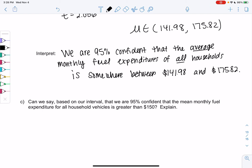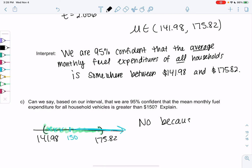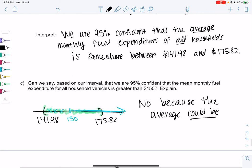Can we say, based on our interval, that we're 95% confident that the mean monthly fuel expenditure is greater than $150? So visually, $141.98 up to $175.82 - anything in this interval is possible. $150 is somewhere in between. So are we confident that it's greater than $150? No, because there's some values in our interval that are less than $150. The average could be $142 or $143 or $144 or $145 - something in the interval that's less than $150.